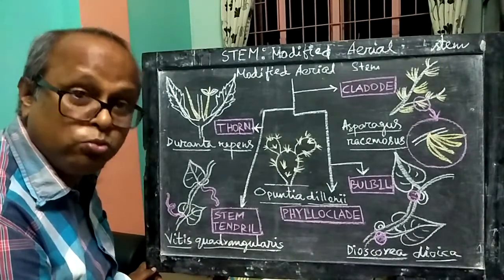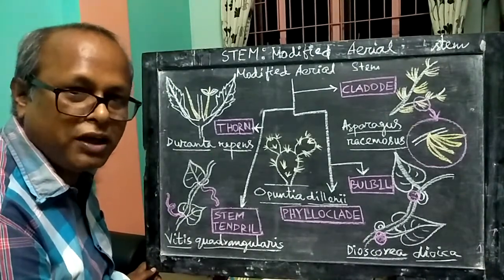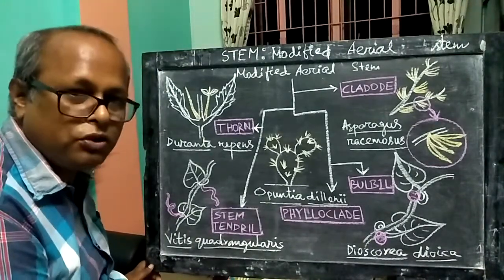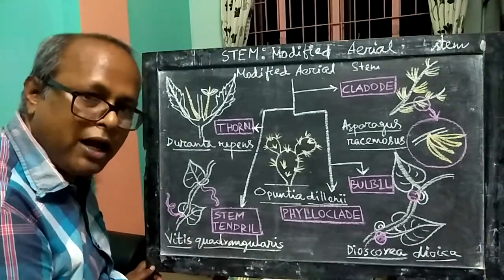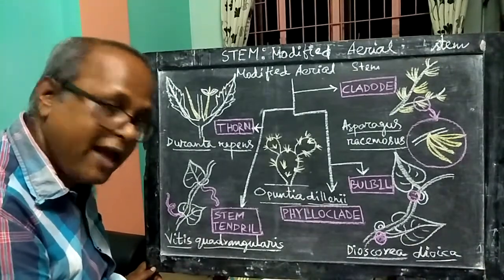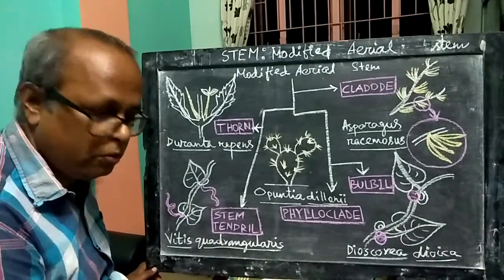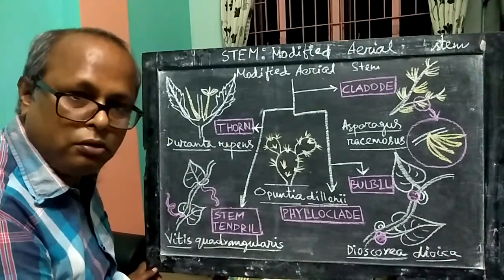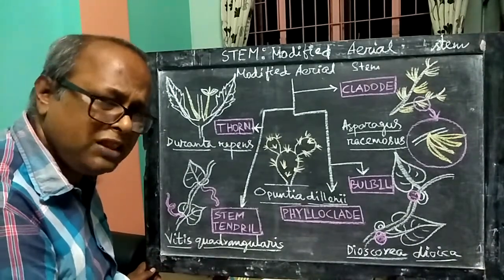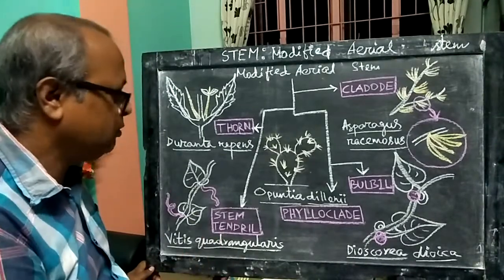When we talk about stem tendrils, examples include lao, kumro, chinghe, uch, etc. What modification do we see in these examples? This is a very common example of a stem tendril. Kumro is a very common name here. The maximum among these are stem tendrils.